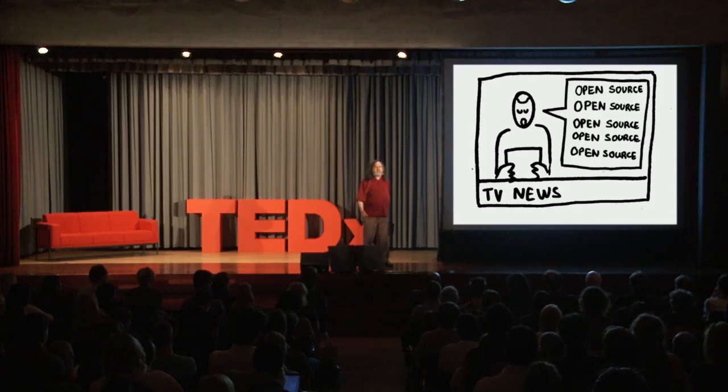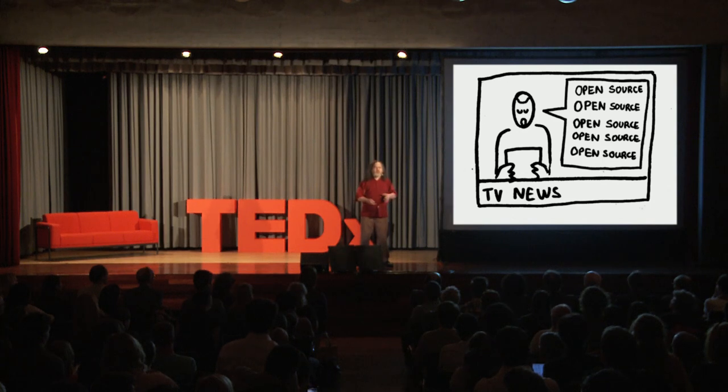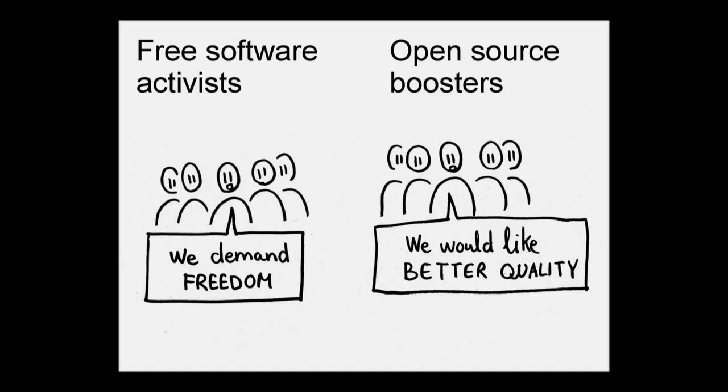Another obstacle is that the mainstream media don't talk about free software. They have a term they use to bury these ethical issues — they say 'open source' instead. It talks about more or less the same programs, but with different ideas. Where free software activists say this is a matter of right and wrong and users deserve freedom, the people who say open source don't want to say that. Instead they say, let the users change the software and redistribute it and they'll make the code better. It may be true, but it's a less important issue. If we want to keep our freedom, we've got to talk about freedom. Say 'free software' and you're helping us every time.